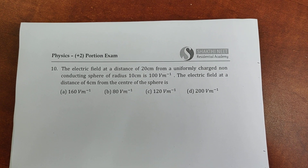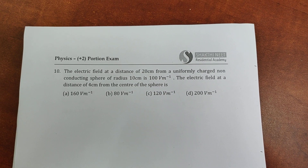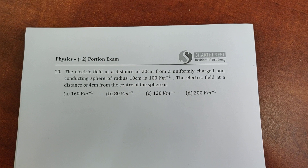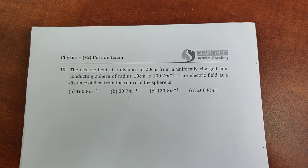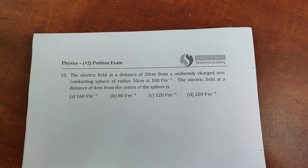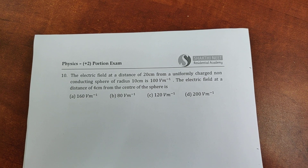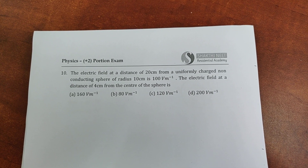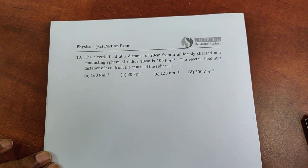Look at this problem. The electric field at a distance of 20 centimeter from a uniformly charged non-conducting sphere of radius 10 centimeter is 100 volt per meter. At the exterior point where the electric field is 100 volts per meter, the electric field at a distance of 4 centimeter — that is an interior point from the center of the sphere — is what? Let us solve this problem.